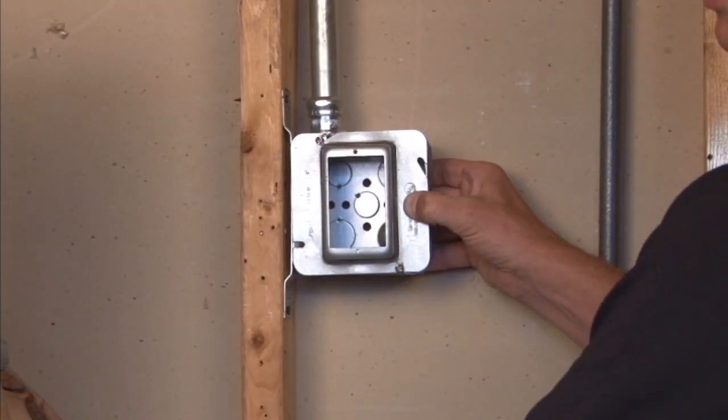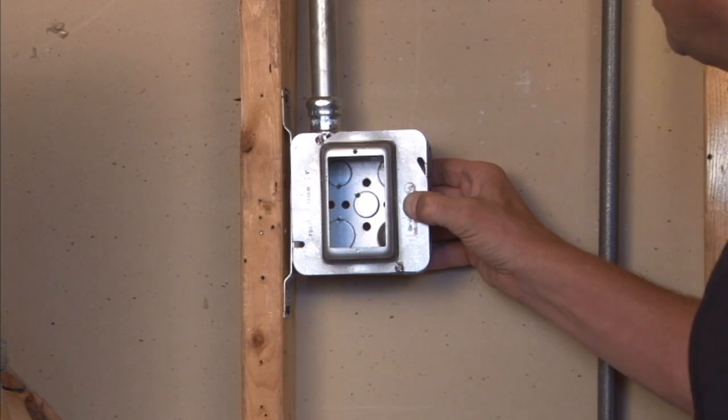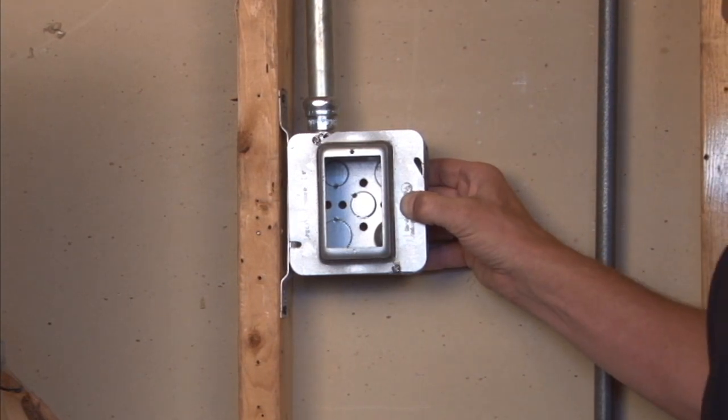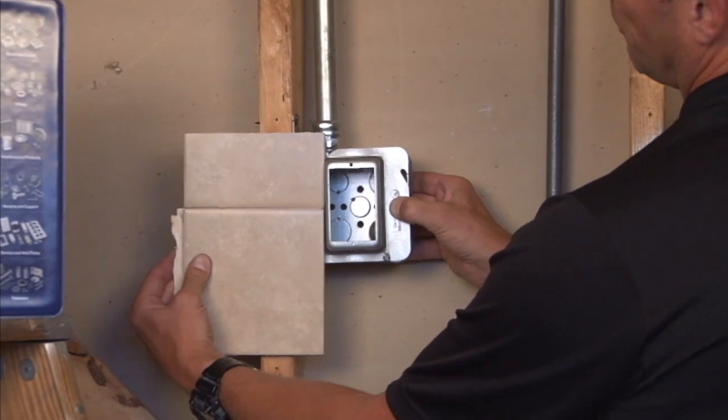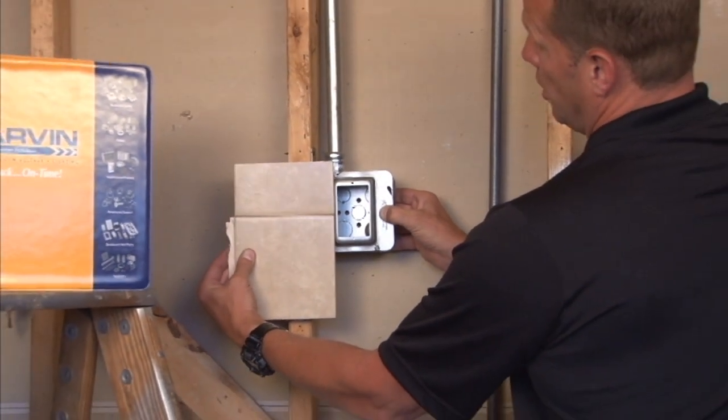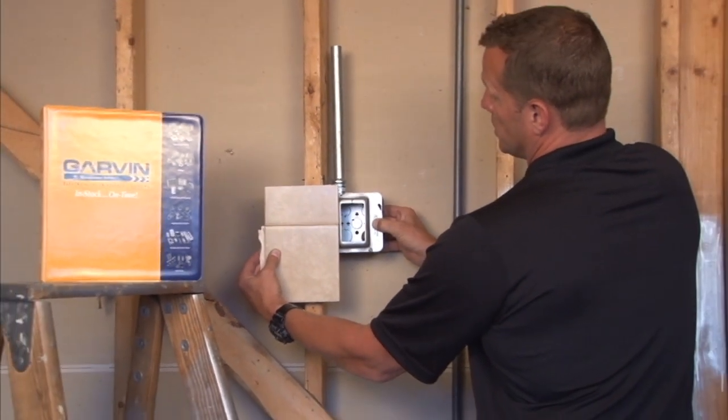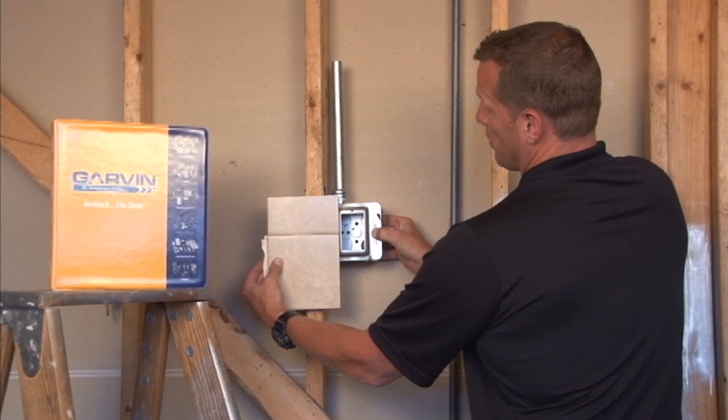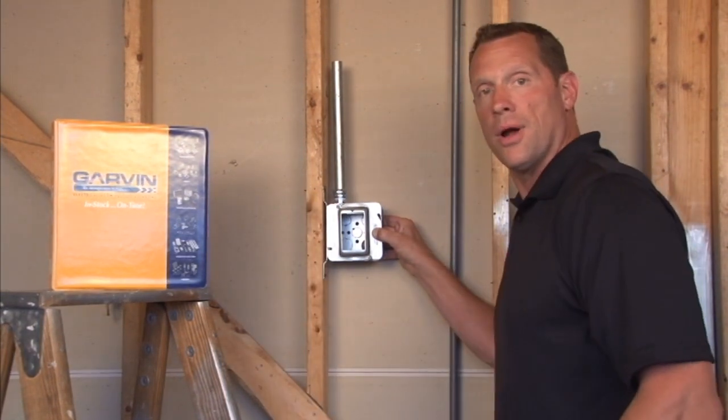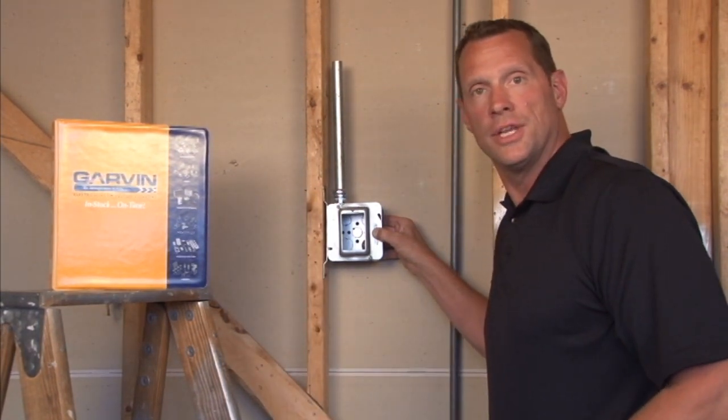This particular unit is raised one inch for plastered tile or drywall, and it's very important that your finished wall surface comes all the way to the front edge of this particular ring or the device won't sit properly. For these and other great products, visit us online at GarvinIndustries.com.